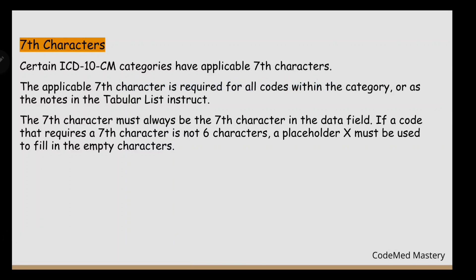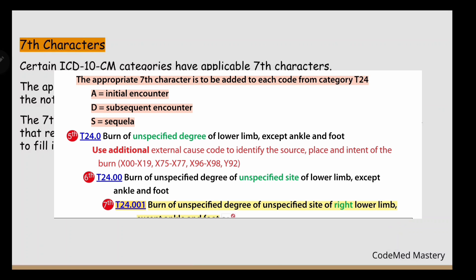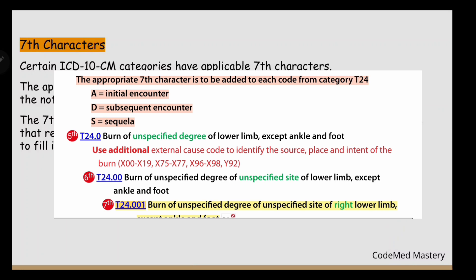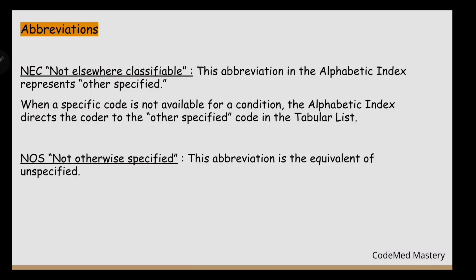Next are seventh characters. Certain ICD-10-CM categories have applicable seventh characters. The seventh character is required for all codes within the category, as noted in the tabular list, and must always be in the seventh character position of the data field. For example, for code T24.001, you add a seventh character: A for initial encounter, D for subsequent encounter, and S for sequela. So for an initial encounter, the code would be T24.001A.